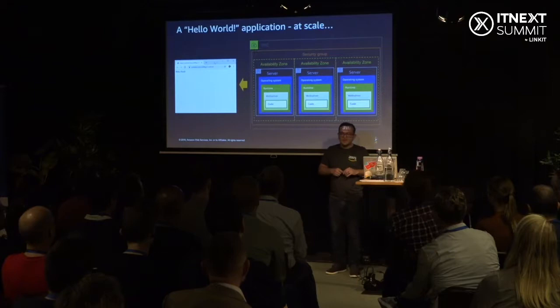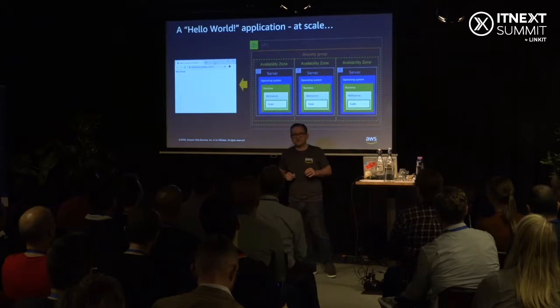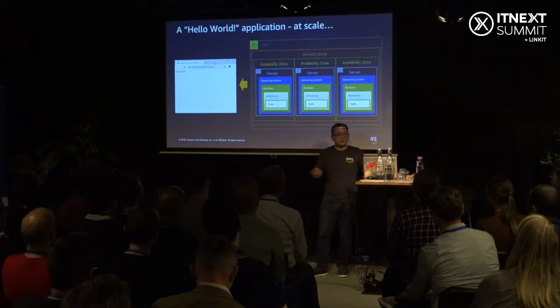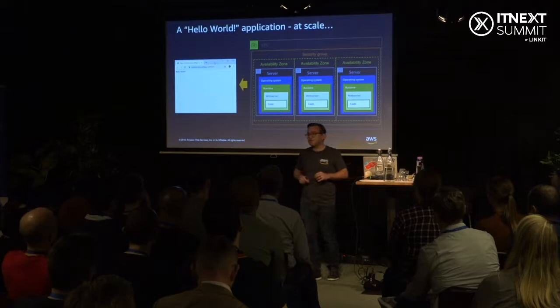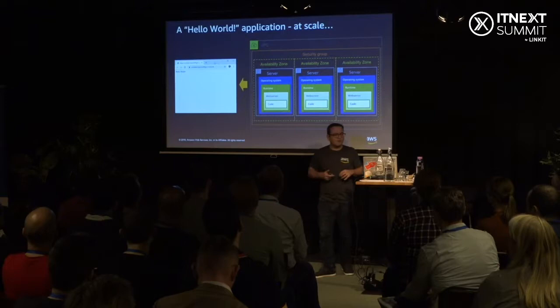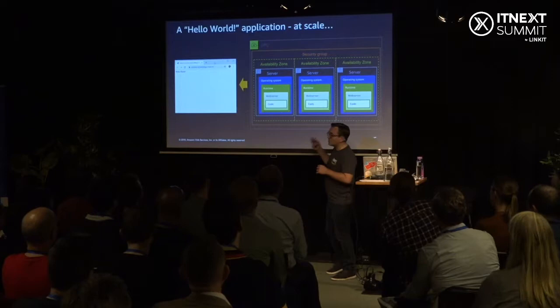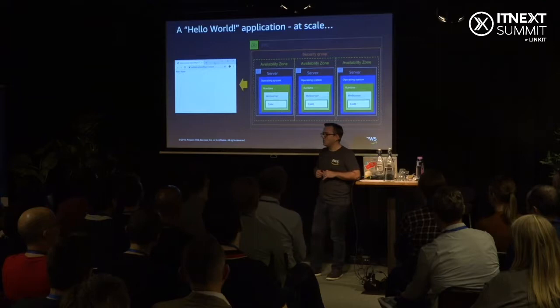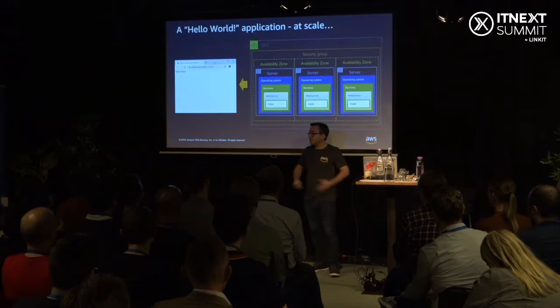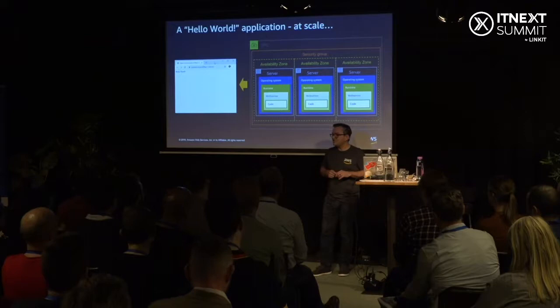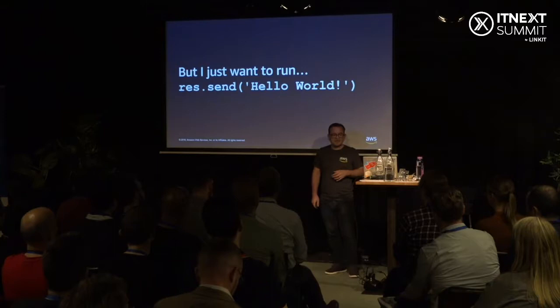Now let's imagine Hello World at scale. I can't have one server because I need high availability, so I need two or three servers in different regions — separate availability zones in AWS parlance. I need images of those servers that somebody has to manage, maintain, and keep updated. These servers need security groups and VPCs. If demand spikes I need auto scaling, but if demand drops I still can't go below a minimum for HA. I've still just come back to wanting to run Hello World.